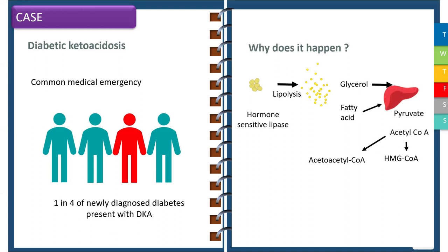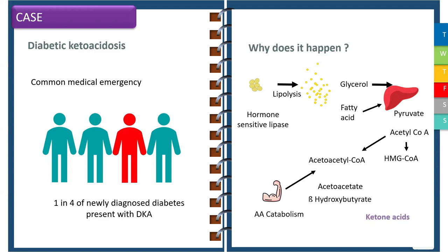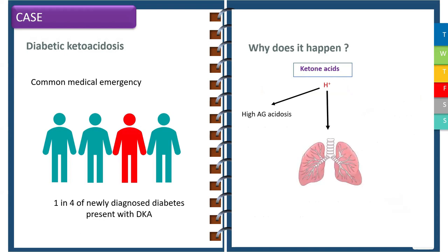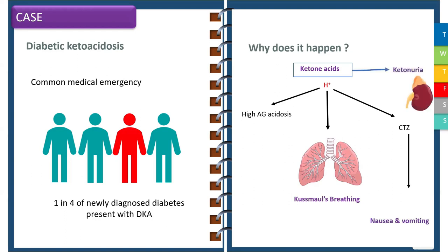Glycerol and fatty acids reach the liver where they are converted into pyruvate and acetyl-CoA. The acetyl-CoA molecules are then converted into acetoacetyl-CoA and HMG-CoA. Amino acid catabolism also contributes to acetoacetyl-CoA formation. These form acetoacetate and beta-hydroxybutyrate, the major ketone acids of the body. These ketoacids are potent proton generators, resulting in high anion gap metabolic acidosis. To compensate, the patient breathes rapidly — Kussmaul breathing — and the chemoreceptor trigger zone is stimulated, causing nausea and vomiting. Excess ketones are also excreted by the kidneys, leading to ketonuria.